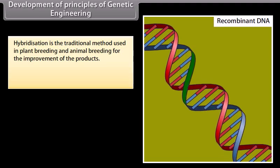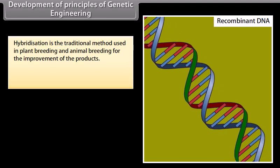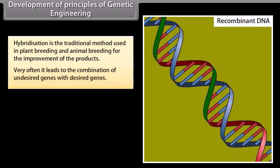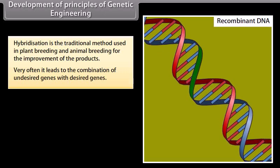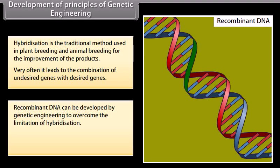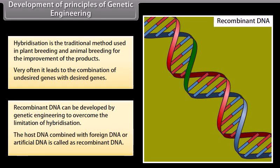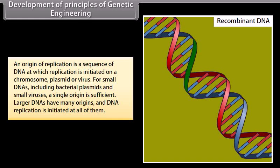Development of principles of genetic engineering. Hybridization is the traditional method used in plant breeding and animal breeding for the improvement of products. Very often it leads to the combination of undesired genes with desired genes. Recombinant DNA can be developed by genetic engineering to overcome the limitation of hybridization. The host DNA combined with foreign DNA or artificial DNA is called recombinant DNA. An origin of replication is a sequence of DNA at which replication is initiated on a chromosome, plasmid, or virus. For small DNAs, including bacterial plasmids and small viruses, a single origin is sufficient. Larger DNAs have many origins and DNA replication is initiated at all of them.